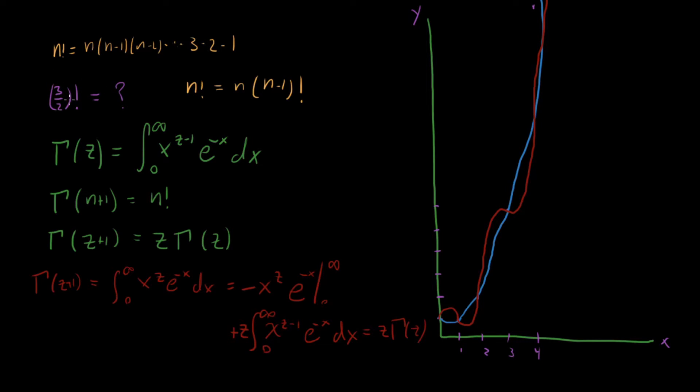Because these weird, you know, three halves factorial, one half factorial, 10 halves factorial—those types of numbers come up quite a lot, actually, as you do more and more math.